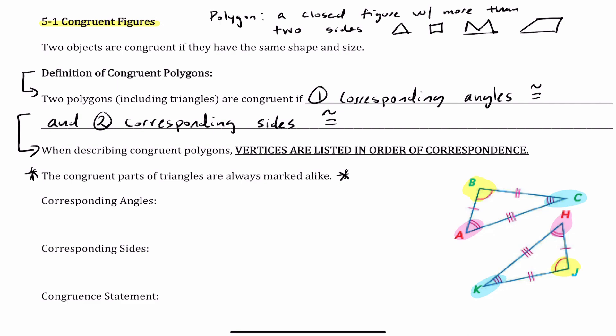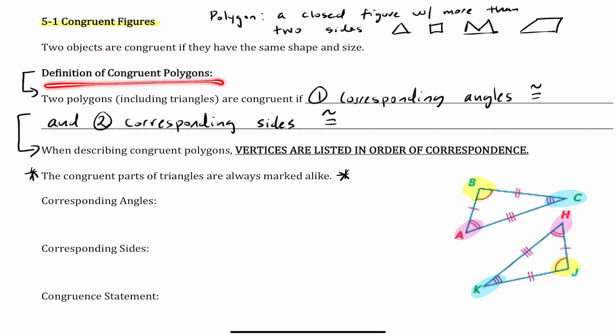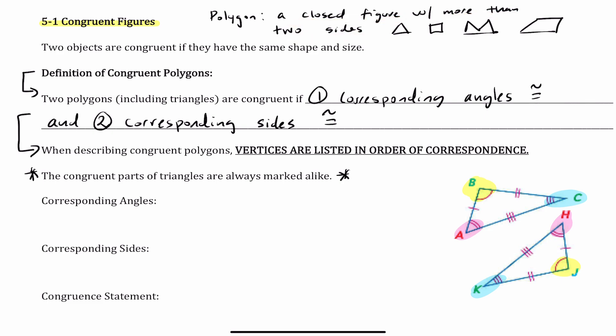Today we're going to talk about Lesson 5-1: Congruent Figures. Two objects are congruent if they have the same shape and size. The definition of congruent polygons — polygons are closed figures with more than two sides. Some examples of polygons are triangles, squares, and quadrilaterals. So as long as it is a closed figure with more than two sides, it is considered a polygon.